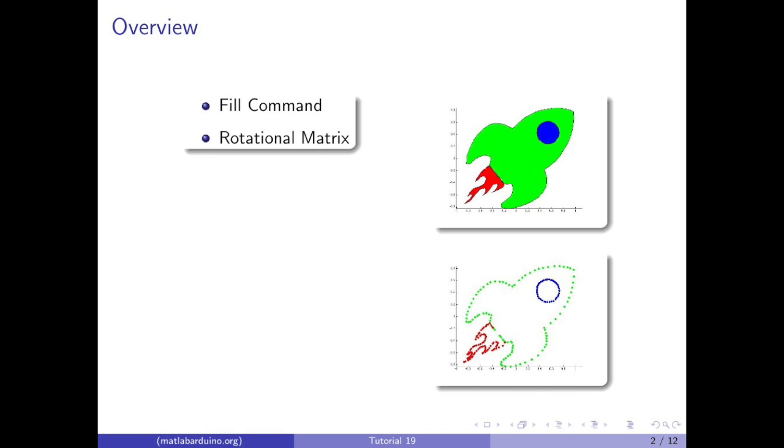We will be going over the fill command, then a rotation using a rotation matrix. We will be rotating, scaling, and translating this rocket ship. The rocket ship is drawn using the fill command using the points shown here.